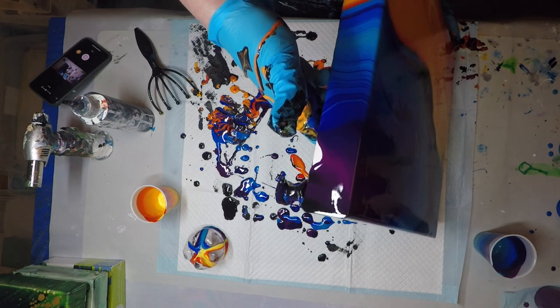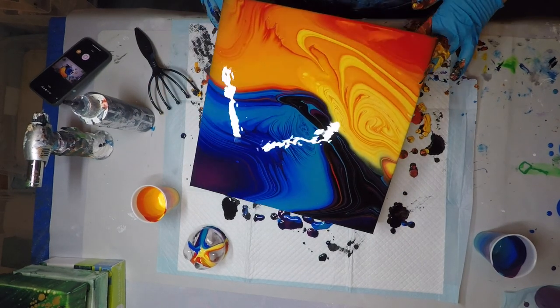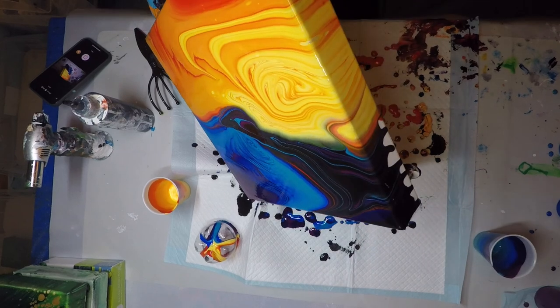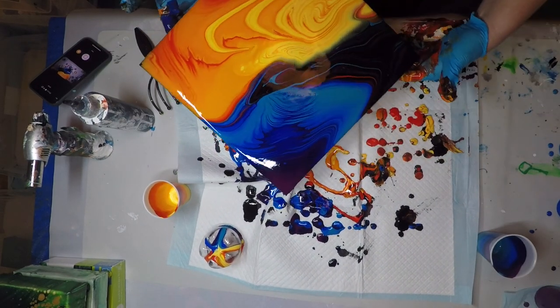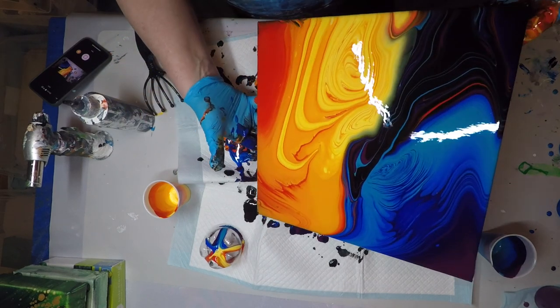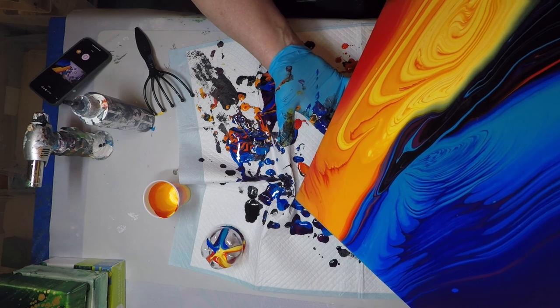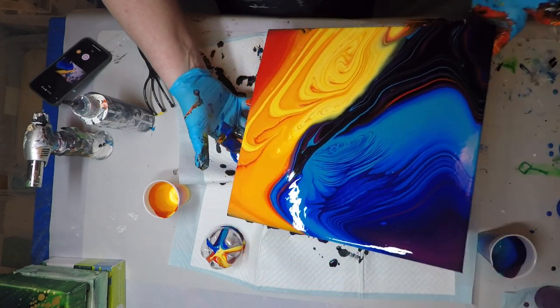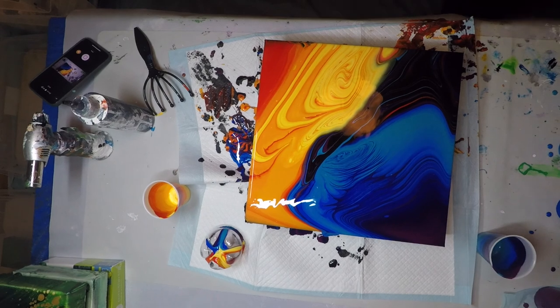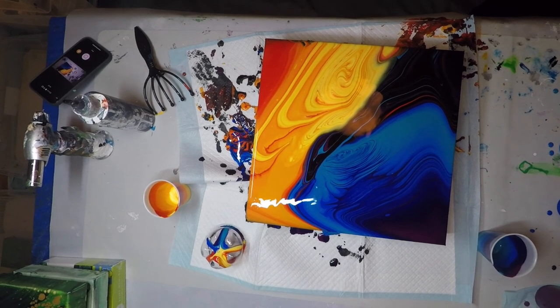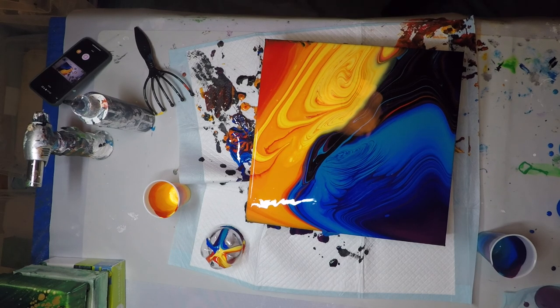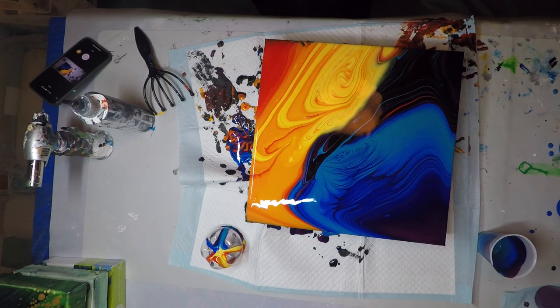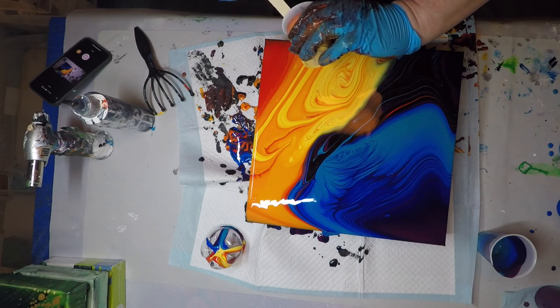I haven't decided what I'm going to name it yet, by the end of the video. But right now, I'm still thinking. Just sometimes the colors pop and sometimes they turn to mud. And I love it when they pop. Not a lot of cells in this. I didn't use any silicone or anything. But usually I get a little bit of cells. But my paint is a little thicker. I'm learning that too. The consistencies.